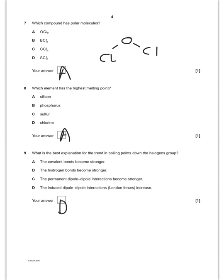Which is the best explanation for the trend in boiling points down the halogens group? That is going to be D. Obviously you know we do not break covalent bonds when you boil a substance. There certainly aren't any hydrogen bonds between the halogen molecules. For a start, there aren't any hydrogens there. Permanent dipole-dipole interactions - they do not have any permanent dipole-dipole in their molecules. And the answer is D.